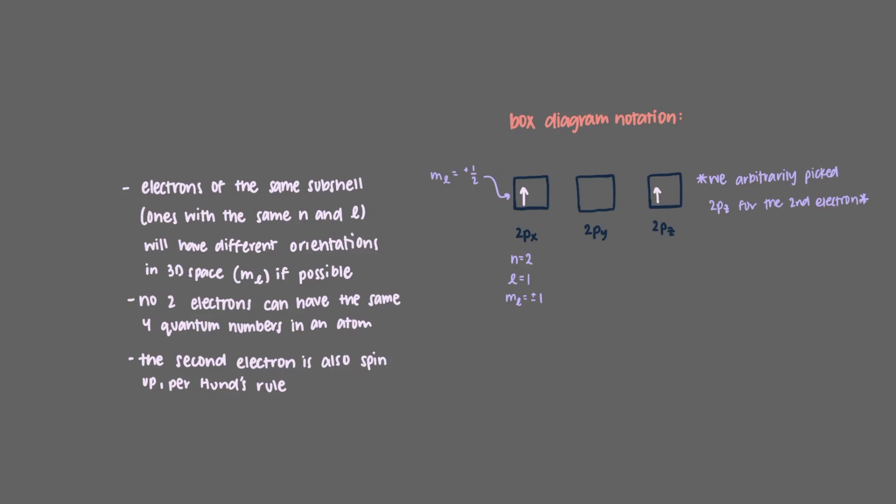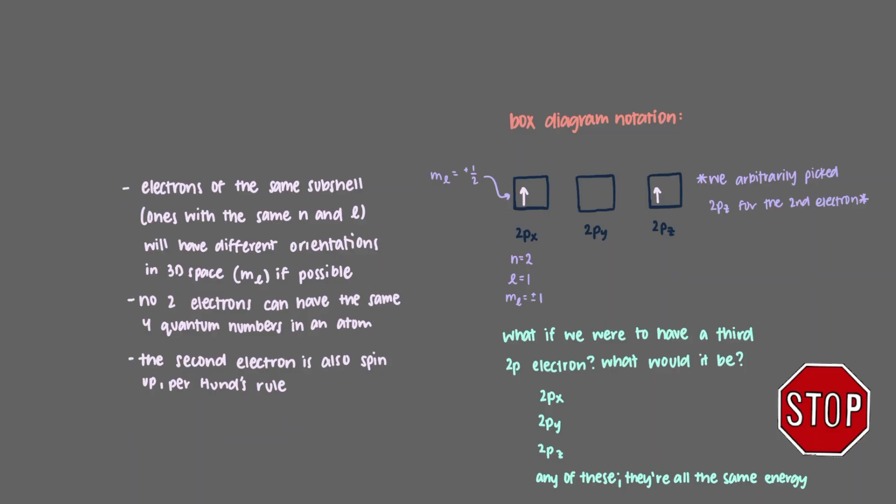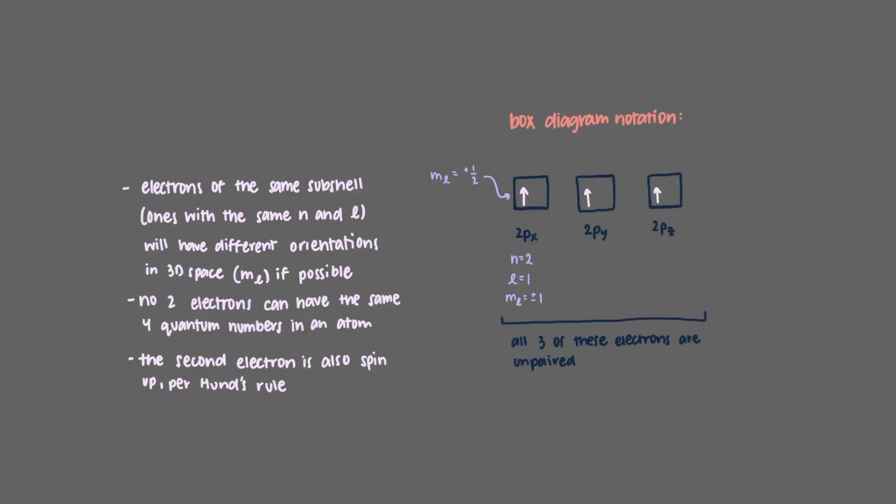What if we were to have a third 2p electron? What would it be? The third electron would be 2py. All three 2p electrons would be unpaired, and this is what leads to the lowest energy state.